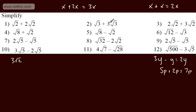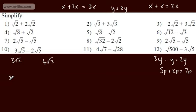On the next one, root 3 plus 3 root 3 gives 4 root 3 — just like y plus 3y gives 4y. Now let's look at root 8 plus root 2. On the face of it, they're not like surds, but we manipulate one: root 8 is 2 root 2. So 2 root 2 plus root 2 gives 3 root 2. And root 8 minus root 2 gives 2 root 2 minus root 2, which is just root 2.